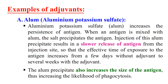Now let's discuss some examples of adjuvants. The first is alum, aluminum potassium sulfate. When we mix the antigen with alum, the antigen gets precipitated with this salt. If this mixture is injected into the body, the antigen will be released slowly because the salt precipitates the antigen, increasing its time of stay inside the body. As its time of stay increases, the immune system gets enough time to activate against that antigen. This is how alum increases the immunogenicity of an antigen.